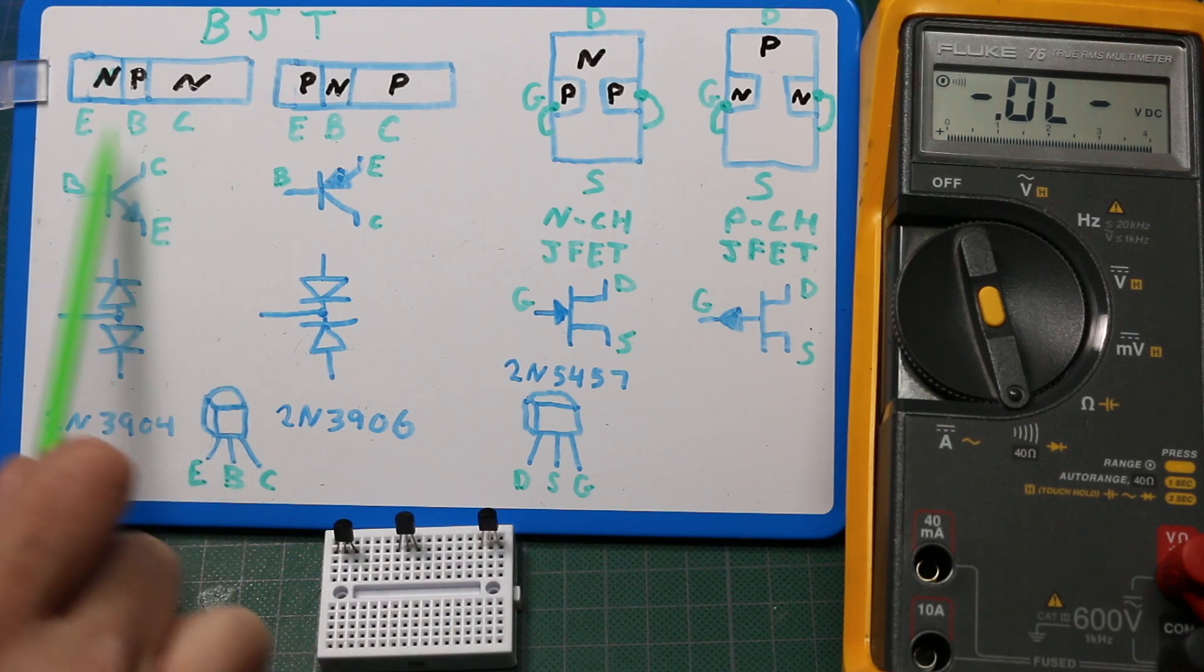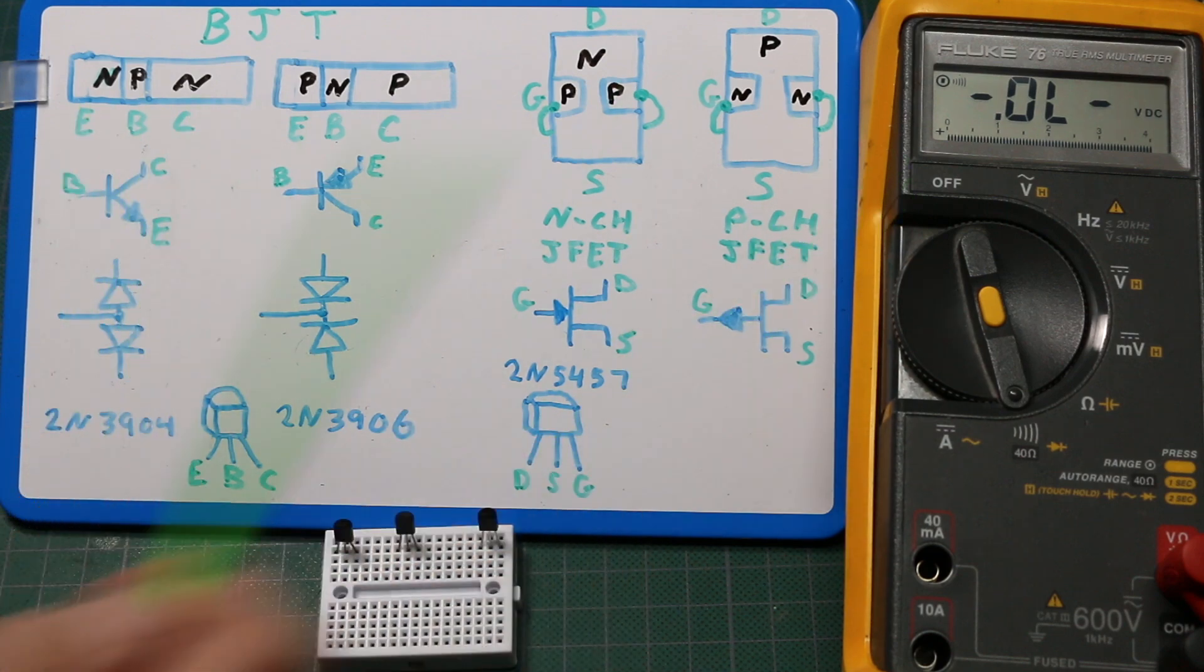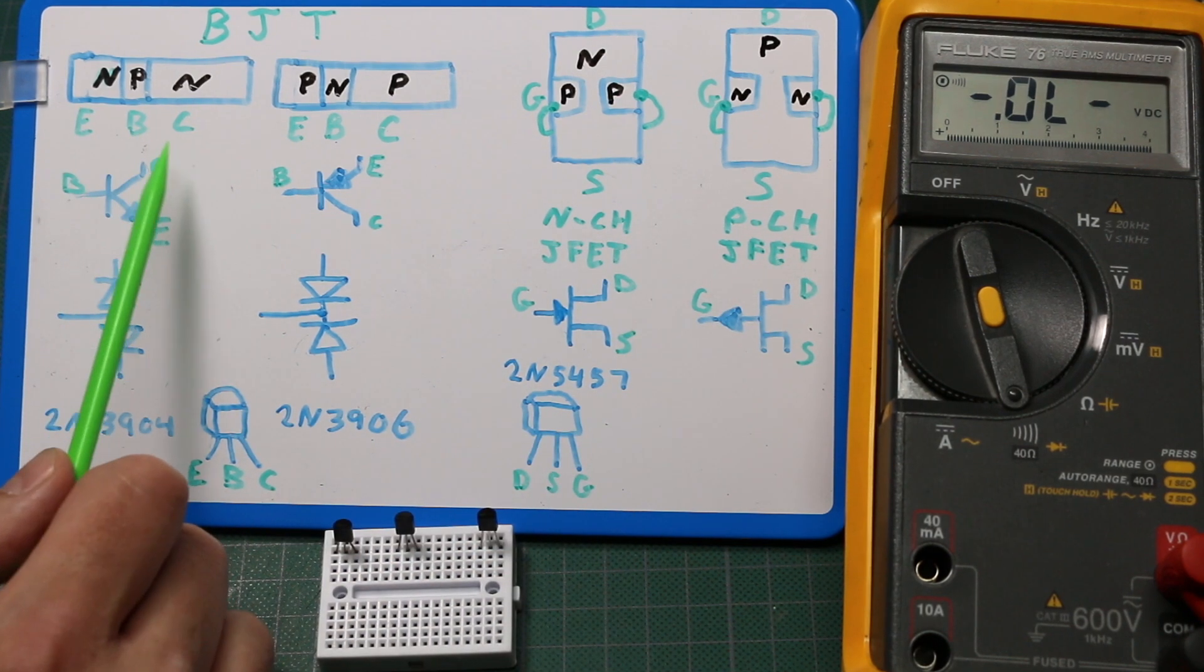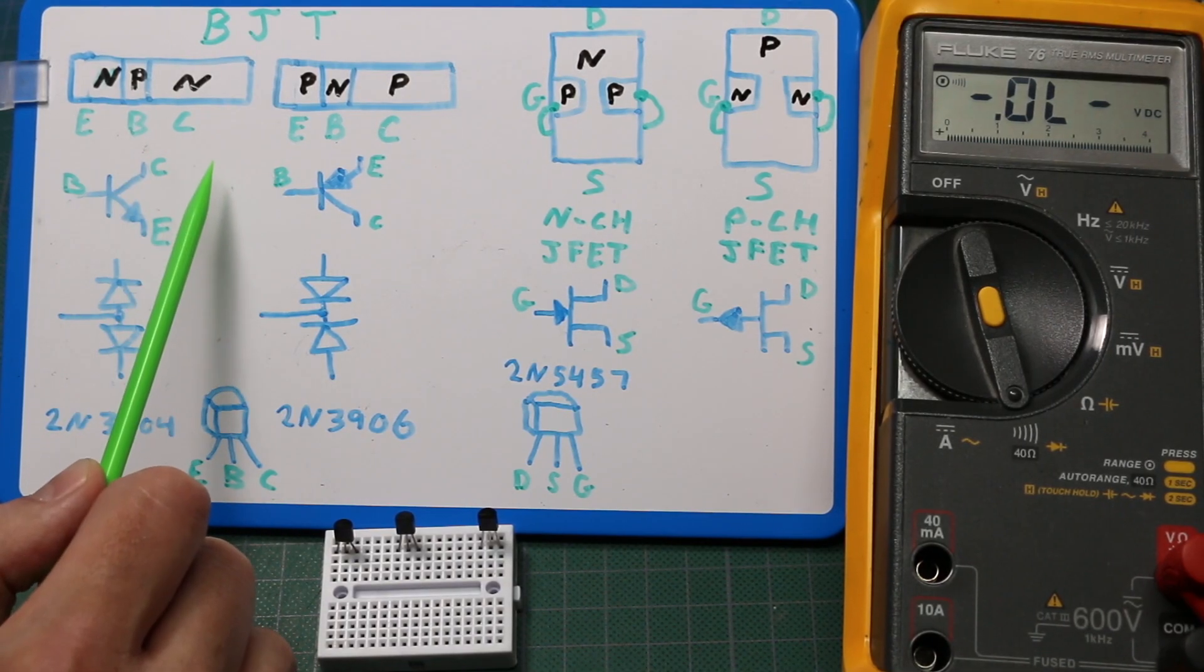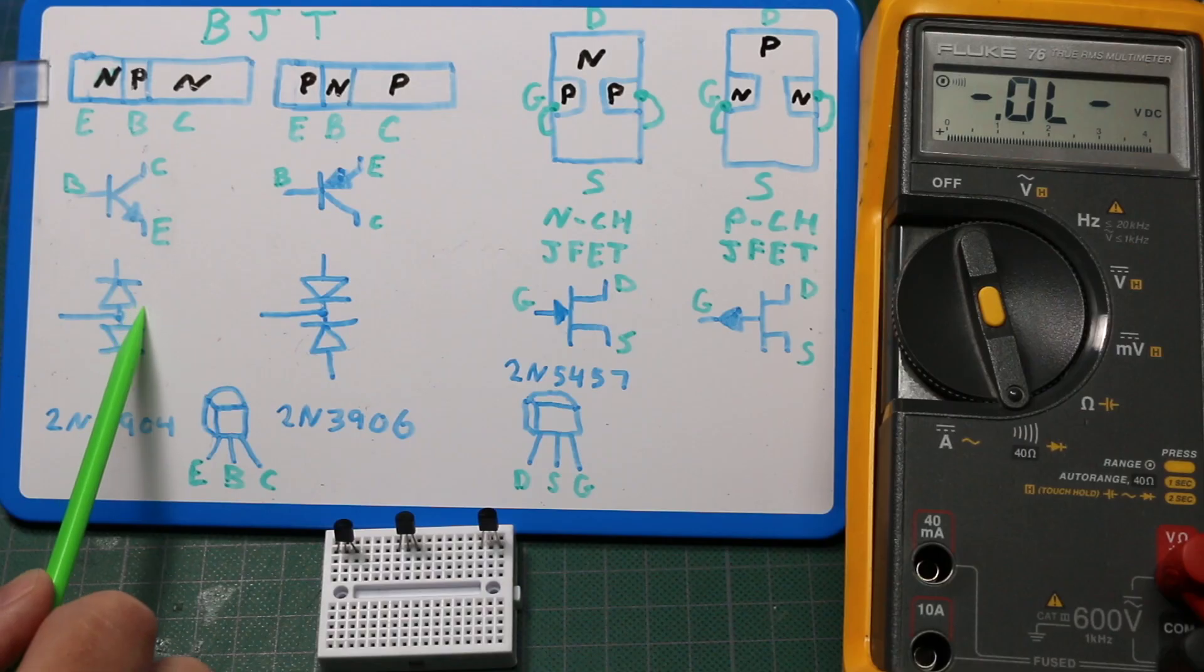So if we want to test the NPN or PNP with a multimeter, we can check for shorts between any pins with a continuity test. But if it doesn't look shorted, we can also check if these PN junctions are intact by measuring for diode drops.